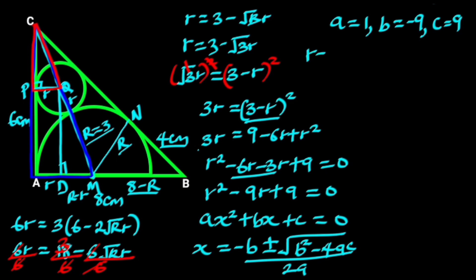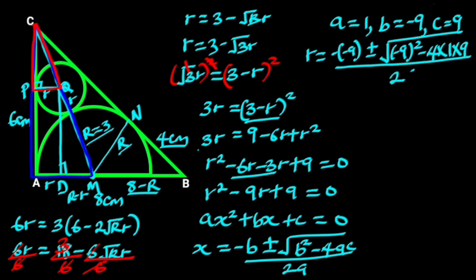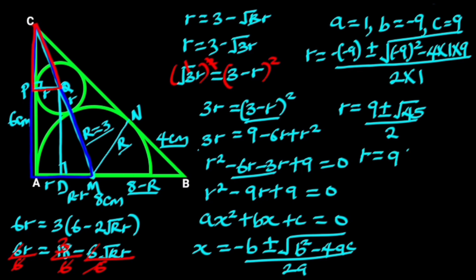Hence, r equals (minus(minus 9) plus or minus square root of (minus 9)² minus 4 times 1 times 9) all over 2 times 1, which gives us (9 plus or minus √45) all over 2. The square root of 45 is approximately 6.71.